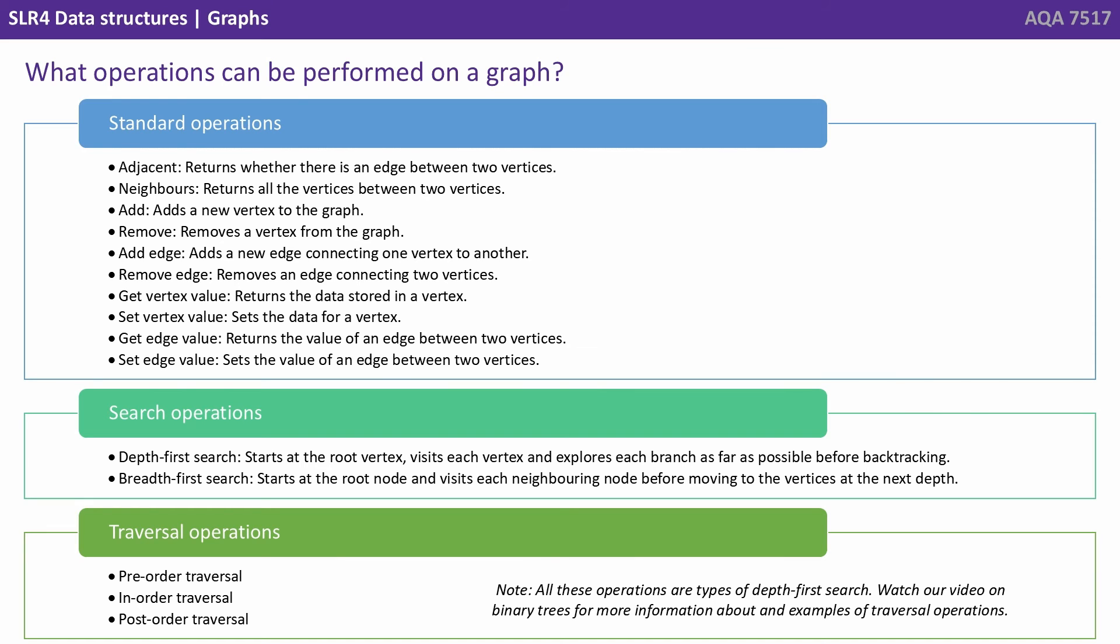Get vertex value returns the data stored in a vertex. Set vertex value sets the data for a vertex. Get edge value returns the value of an edge between two vertices. And set edge value sets the value of an edge between two vertices.